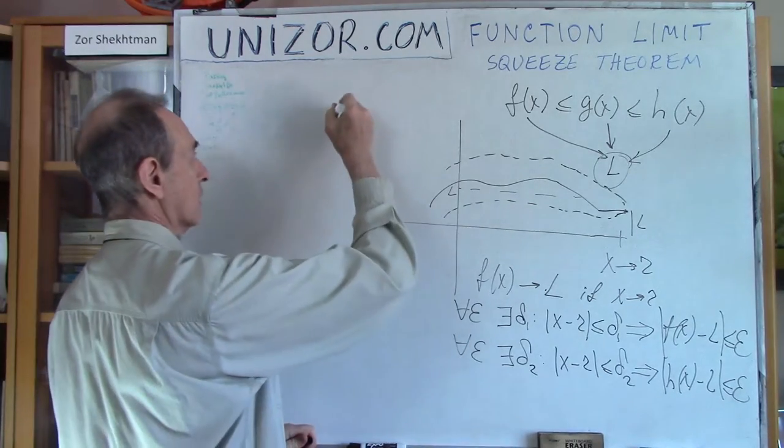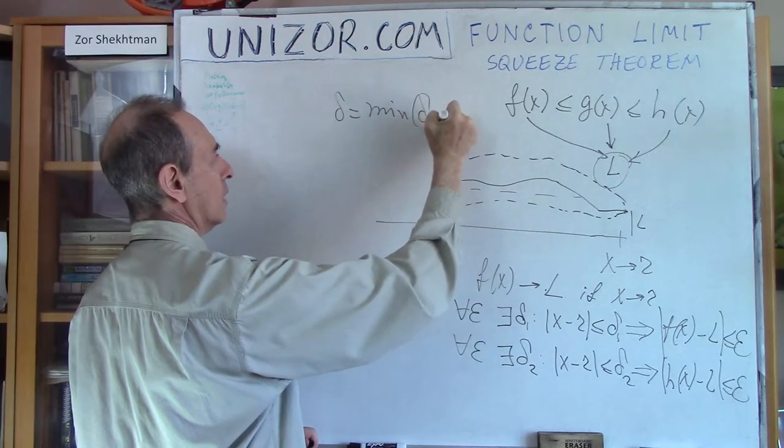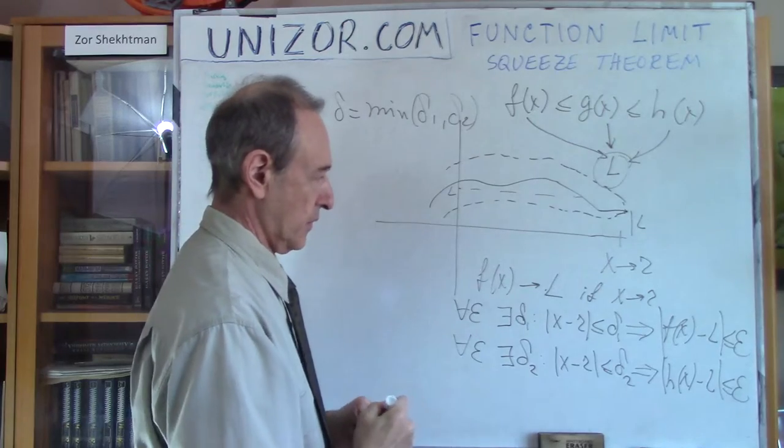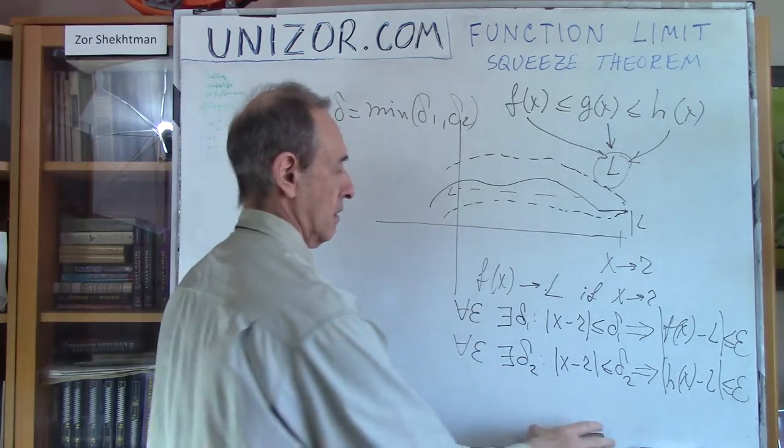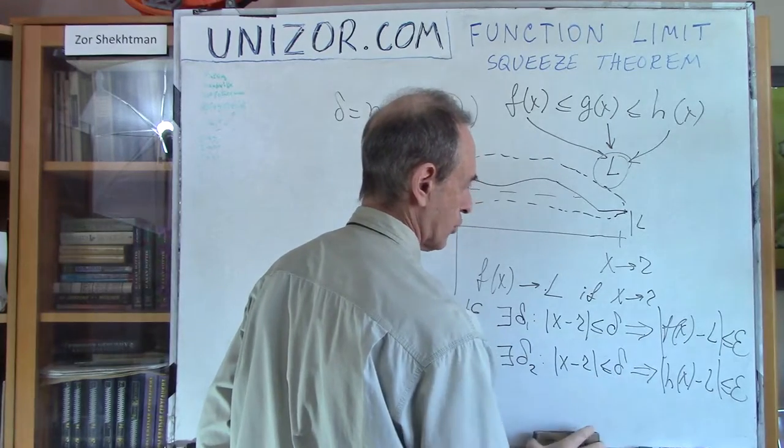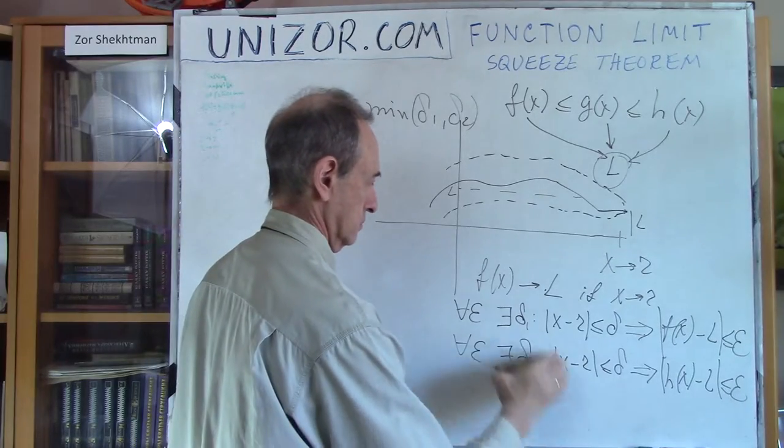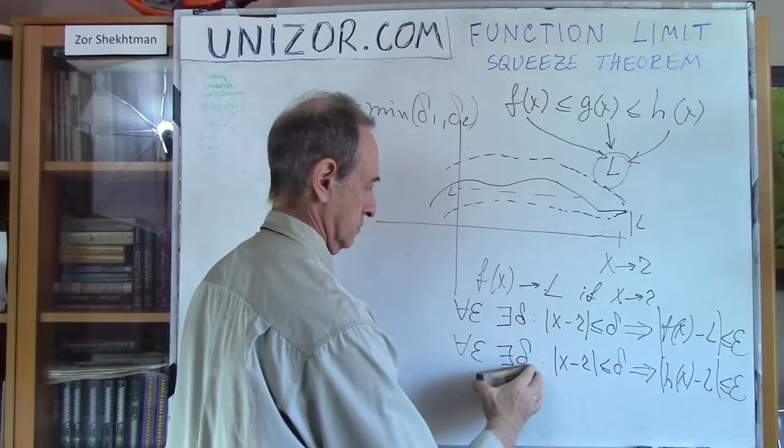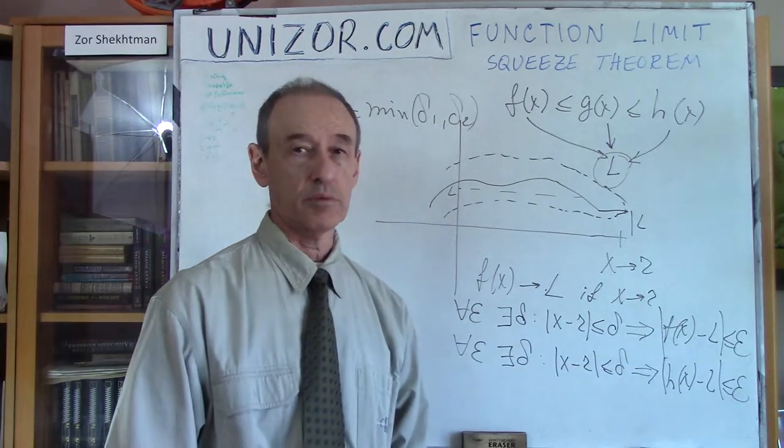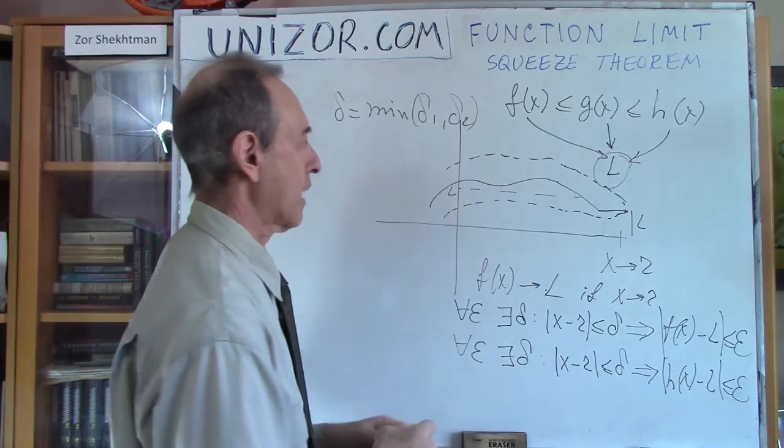Now very simple thing. Let's have delta equals to minimum of delta 1 and delta 2. What happens? Well if delta is the minimum then both are true. So we found such a delta when both of these are true. Now let's just think about graphically.